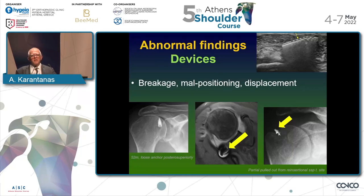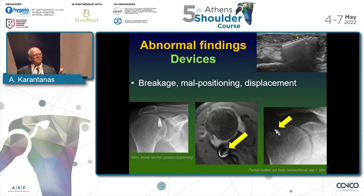Regarding devices, migration can be assessed on MRI — here a device is seen posterior superiorly in the posterior superior aspect of the joint. Usually we have joint effusion, making it easy to assess a loose body. We may have partial detachment, and on ultrasound we may see acoustic shadowing behind the metal, suggesting a metallic component.